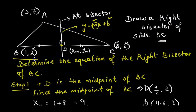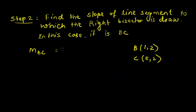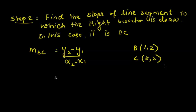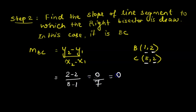We know B is (1, 2) and C is (8, 2). Using the slope formula (y2 - y1) / (x2 - x1), the slope equals (2 - 2) / (8 - 1) = 0/7 = 0. So the slope of line BC is 0.